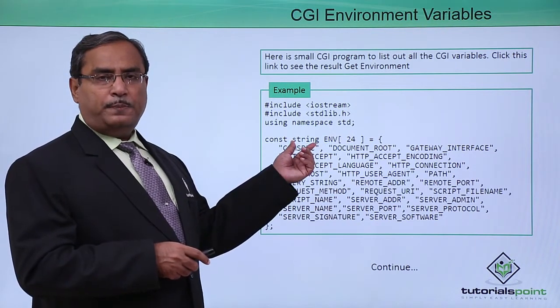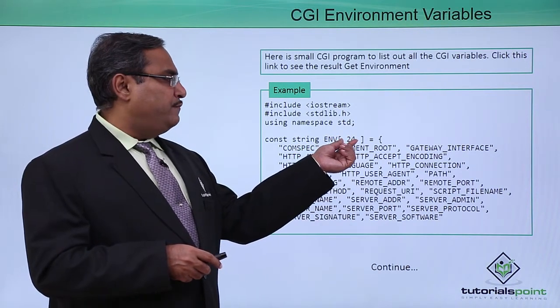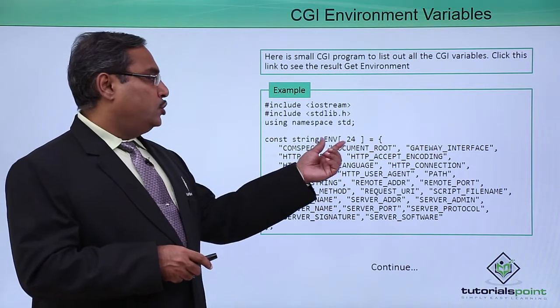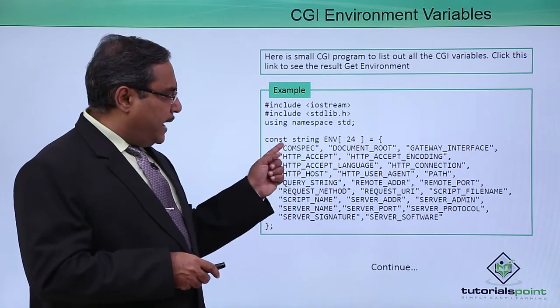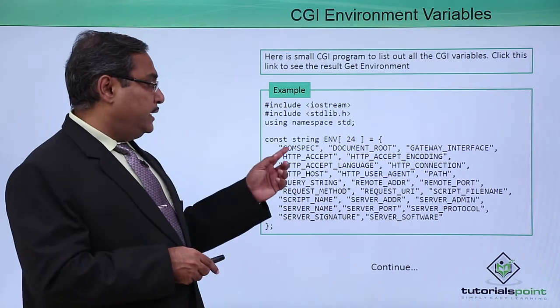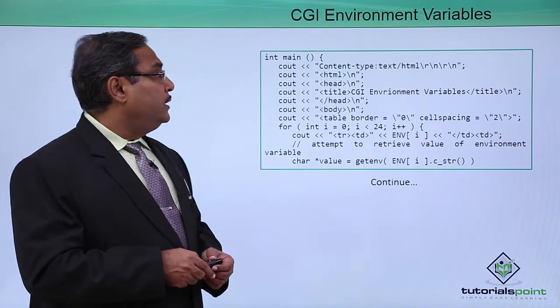Here this is a string type of array. The name of the array is env and it has 24 locations, and this is a constant string array. It has 24 locations where we have mentioned 24 different environment variables residing from subscript 0 to 23.